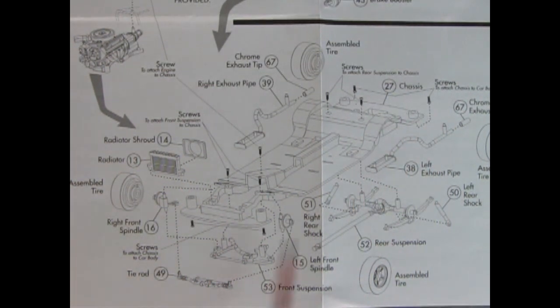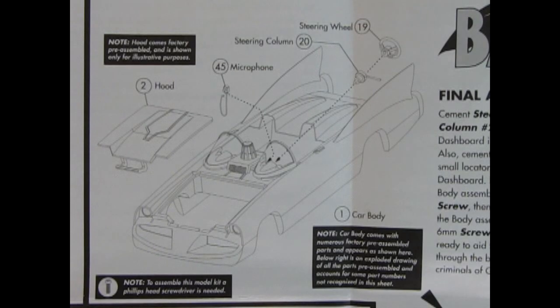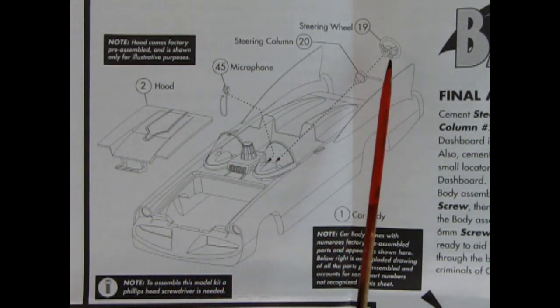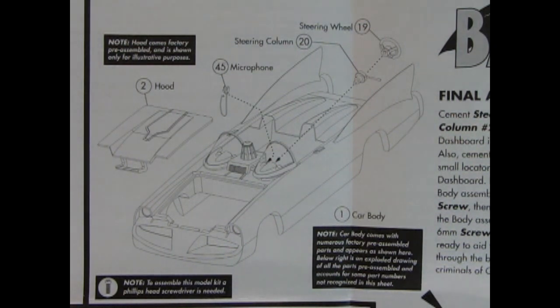Once it's all together, it should look really, really good. Here we have the final assembly, which would be to put the hood in underneath. And then add in the microphone in here, the steering column, and the steering wheel. So once all this is done, there's a little thing on the side here that says, The Batmobile now stands ready to aid the dynamic duo as they cruise through the bleak back alleys, where the criminals of Gotham City stay hidden. So that is much like in the 50s Batmobile, the same write-up there.